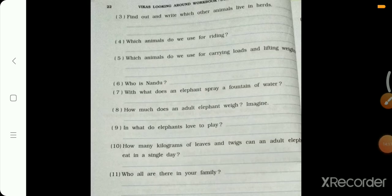Find out and write which other animals live in herds. Aur kaunse animals herd mein rehte hai? Monkey, deer, zebra, wild buffaloes, wild dogs, bulls, kites, fish, they live in a herd.